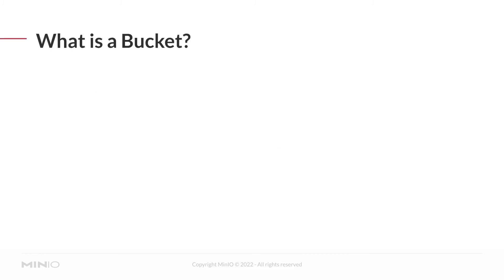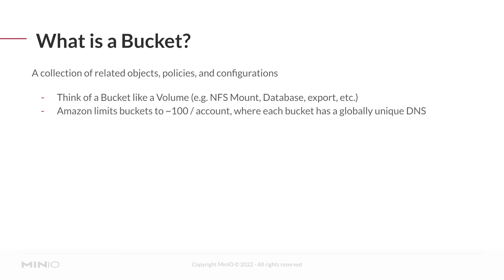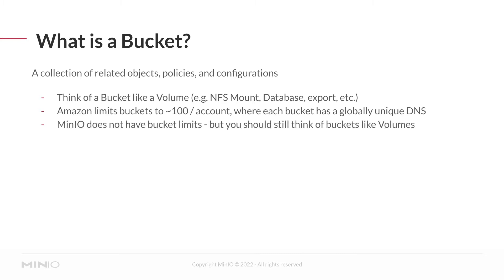The other term we're going to use a lot is 'bucket.' If you're coming from the AWS S3 world, you might already be familiar with this. A bucket is effectively a collection of related objects, policies, and configurations. When applications write or read objects, they're always doing it from a bucket, and the policies and configurations associated with that bucket control access and behavior. You can think of a bucket a bit like a volume in a file system context — something like an NFS mount, a database, or an export.